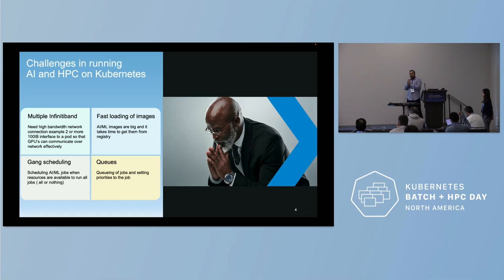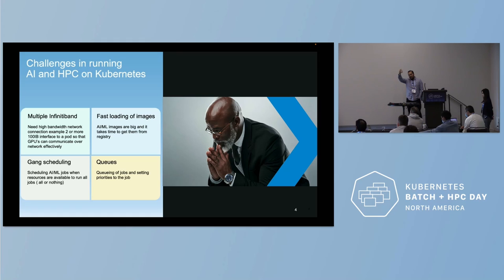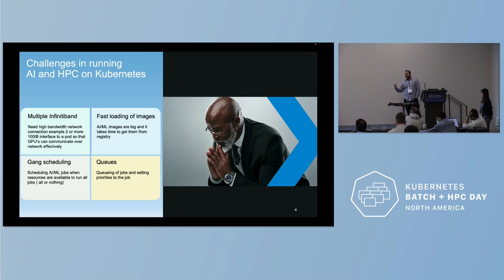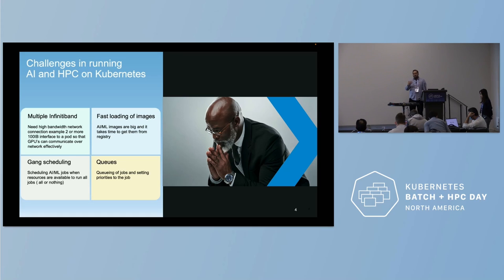The second challenge is the fast loading of images. AI/ML images tend to be very heavy — think about downloading an image from an image registry, it's gigabytes of images. What if you want to cache it? Do you want to cache it on the same node, or on every node? Is your east-west traffic faster than north-south? Rather than going to the registry all the time, you have a cache somewhere. This is a prevalent use case we are seeing.